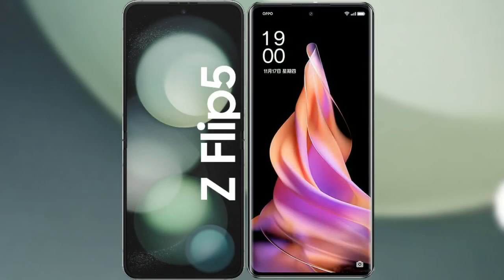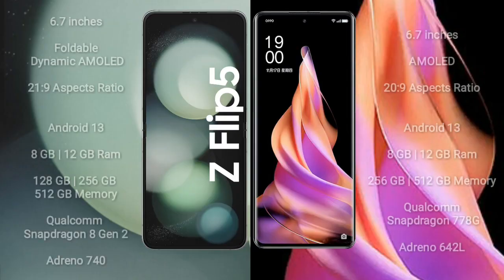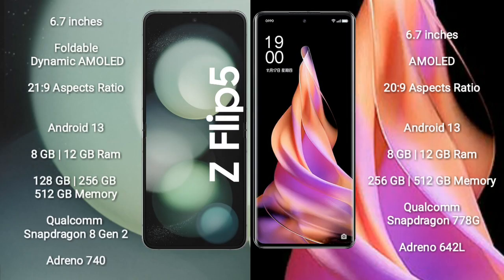I will compare the new Samsung Galaxy Z Flip 5 with Oppo Reno 9. Samsung Galaxy Z Flip 5 comes with a 6.7-inch foldable dynamic AMOLED display and aspect ratio 21:9. Oppo Reno 9 comes with a 6.7-inch AMOLED display and aspect ratio 21:9.